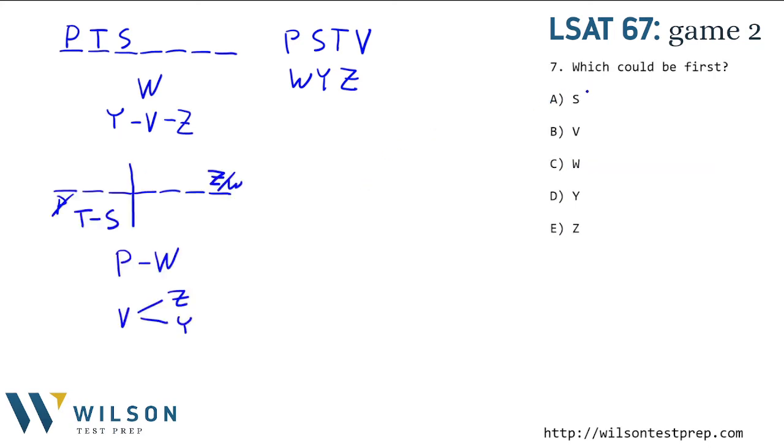Number seven asks, which could be first? So in this world, we could have P first, right? Down here, P is not first. So who could be first? Well, T and V are the other leading items, the other things that are in front of things and not necessarily behind things. S, W, Z, and Y, they have things that are always in front of them. So they can't be first. So P, T, and V could be first. V is the only one that shows up in our answer choices. So B is correct.